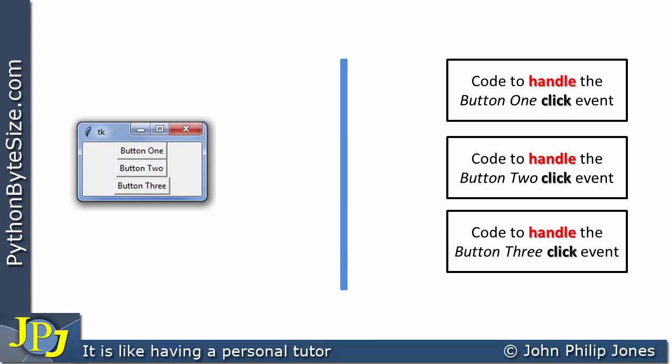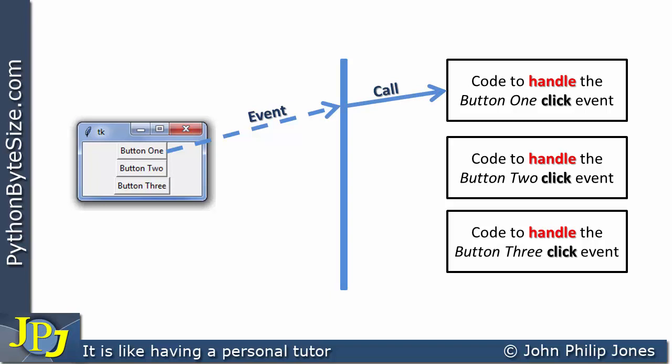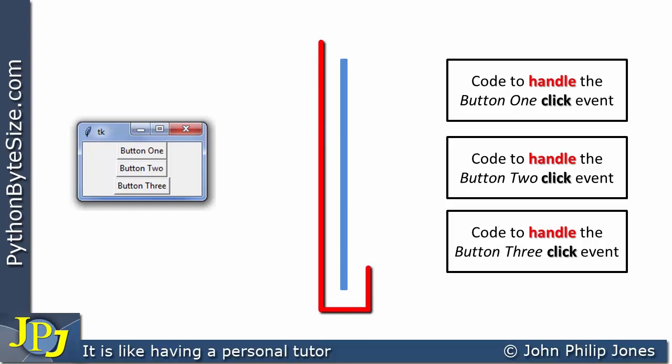Looking at the graphical user interface, I'm going to say: which button shall I click first? I've got a choice of three, so I'll click button three. An event hits the mechanism. The mechanism says: which of these bits of code am I going to call? It calls the code to handle the button three click event, and that code executes and puts a label on the graphical user interface saying 'button three was clicked.' Then I click button two — it calls that handler. Then I click button one — it calls that code. Then we go back to the graphical user interface sitting there waiting for something to happen.